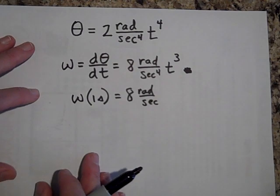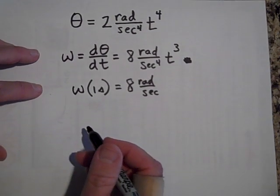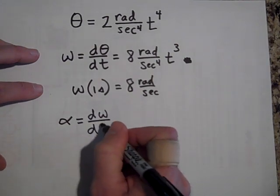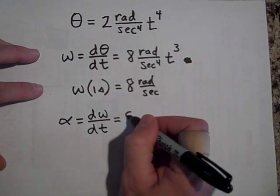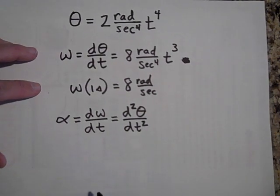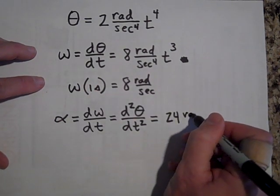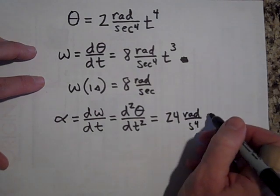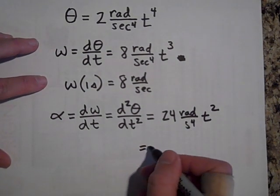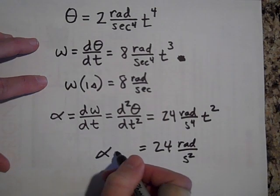How about its angular acceleration at one second? Angular acceleration is the derivative of omega with respect to time — or the second derivative of theta with respect to time. Taking the next derivative gives 24 radians per second to the fourth times t squared. Plugging in one second, alpha equals 24 radians per second squared at t equals one second.